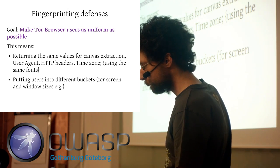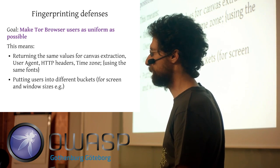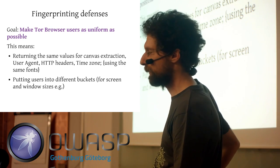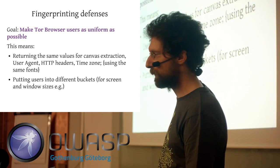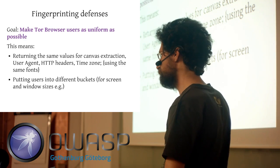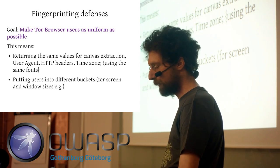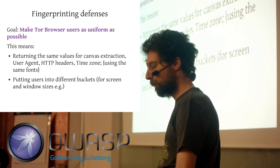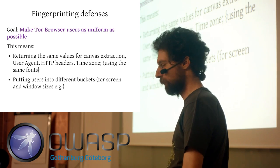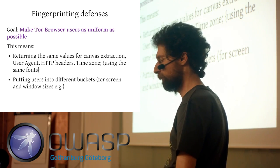Our idea is to make users as uniform as possible in this regard — we try to return the same values for everybody. The user agent is a good example: normally Firefox tells the server which version it is and what OS you're on. What we do is give every user the same user agent regardless of whether they use Linux, macOS, or Windows. The same happens with HTTP headers. The same happens with the time zone — we set it to UTC. Everybody using Tor Browser is on UTC.